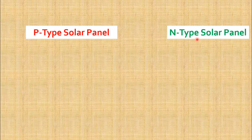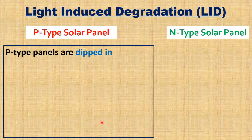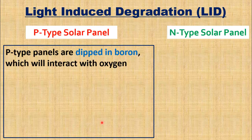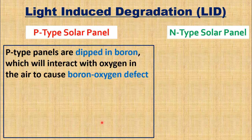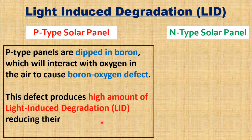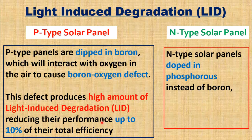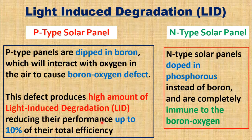Let's first understand the phenomena of light-induced degradation, which is the main difference between N- and P-type solar panels. P-type panels are doped in boron, which will interact with oxygen in the air to cause a boron-oxygen defect. This defect produces a high amount of light-induced degradation, or LID, reducing their performance or efficiency up to 10%. On the other hand, N-type solar panels are doped in phosphorus instead of boron, and are completely immune to the boron-oxygen defect.